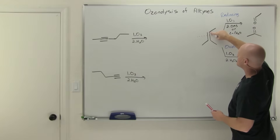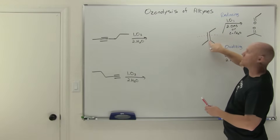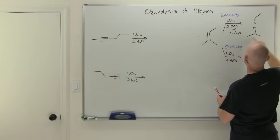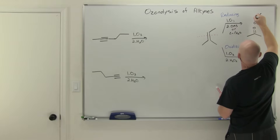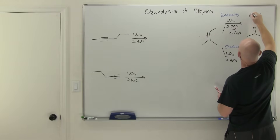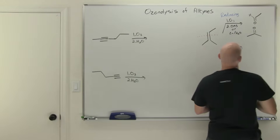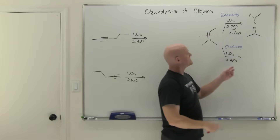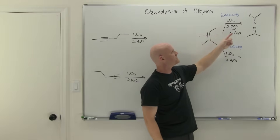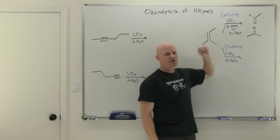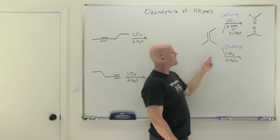This carbon ends up with a double bond to oxygen, and this one ends up with a double bond to oxygen as well. In this case we have a ketone, and in this case we have an aldehyde, where we often draw that hydrogen in. Under reducing conditions, in step two you either use dimethyl sulfide or zinc in water — and that's your product.